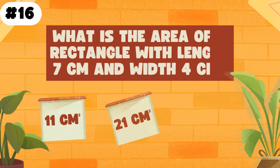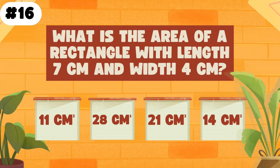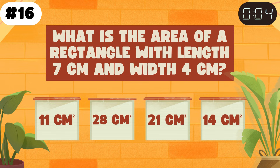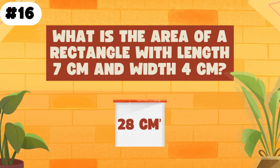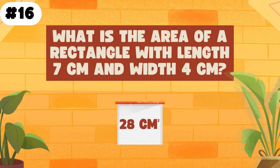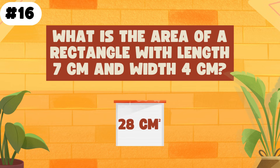What is the area of a rectangle with a length of 7 cm and width of 4 cm? The answer is 28 square centimeters. To find the area, you need to multiply its length by its width.